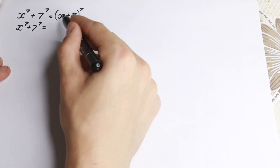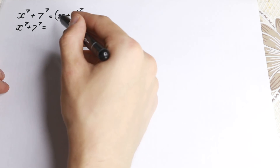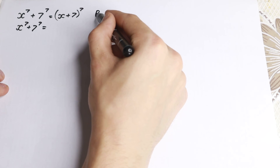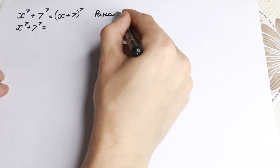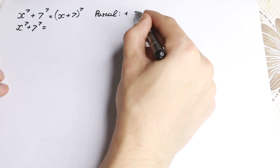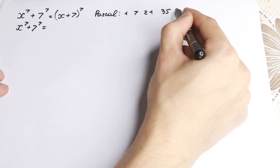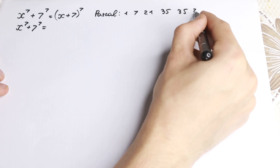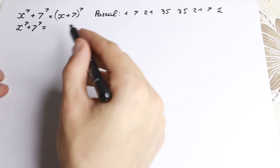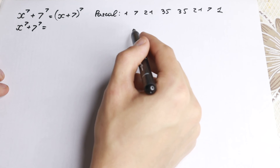With the right hand side we need to know about Pascal's triangle because we have 7th power. We need to raise this to the 7th power using Pascal's triangle. The coefficients for 7th power are: 1, 7, 21, 35, 35, 21, 7, and 1. We need to know these coefficients.